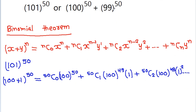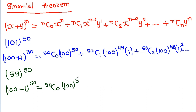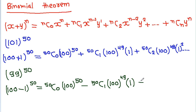Now, 99 to the power 50 can be written as (100 − 1) to the power 50. Expanding this, we get: 50C0 × 100^50 minus 50C1 × 100^49 × 1 plus 50C2 × 100^48 × 1^2, and so on up to 50C50 × (−1)^50.